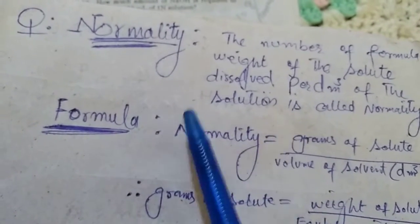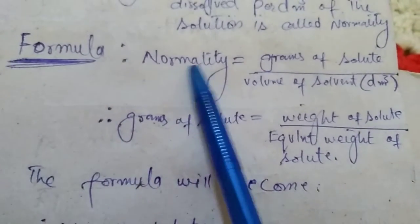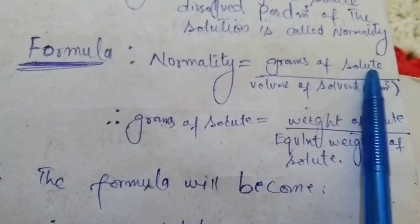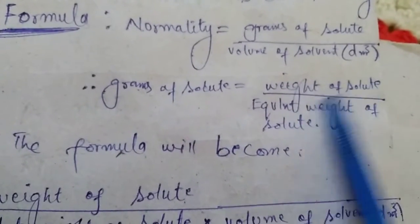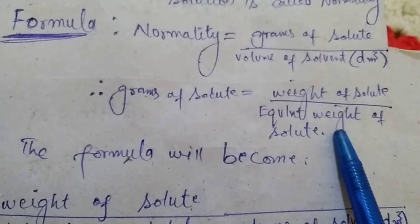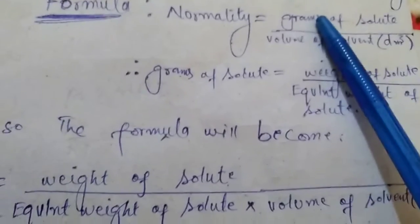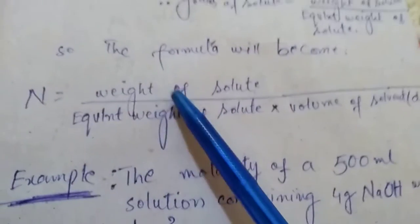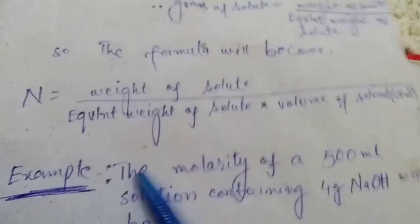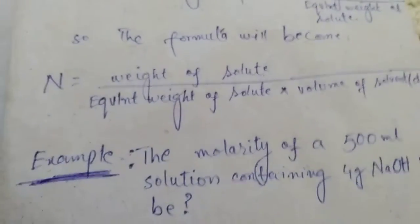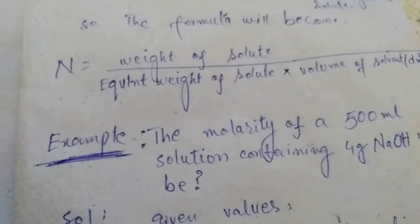This will be equal to normality. Normality has its own formula: normality is equal to grams of solute divided by volume of solution. The grams of solute equals the weight of solute divided by the equivalent weight of solute. So the formula becomes: normality = weight of solute divided by (equivalent weight of solute × volume of solution in dm³).